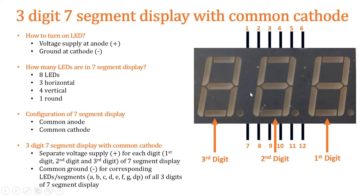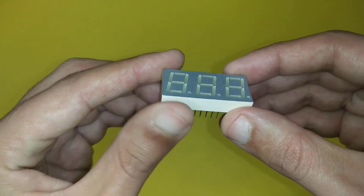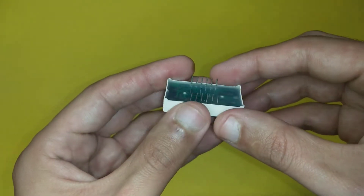This module which we are using in this video is a 3-digit 7-segment display with common anode. It means that it has a separate voltage supply for each digit, whereas it has a common ground for corresponding LEDs or segments which are A, B, C, D, E, F, G, and DP. So this is the 7-segment display module which we are going to use in this video. It has 12 pins — six at the top and six at the bottom.